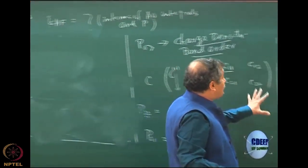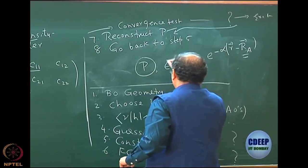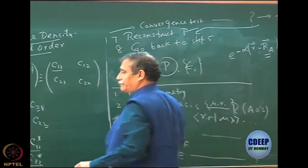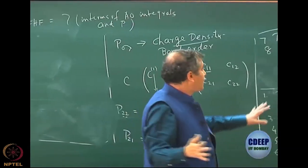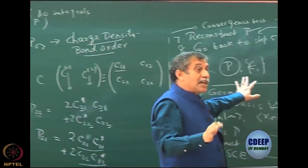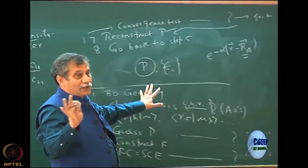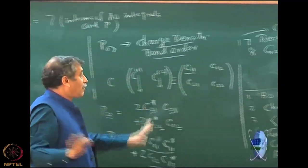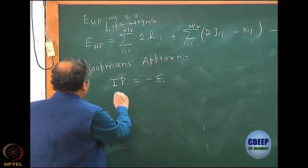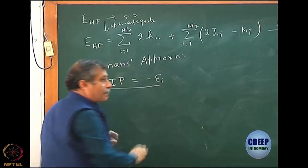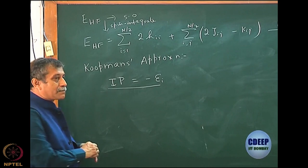Even when here I am doing FC equal to SC, I get the eigenvalues — the energies I get — which are actually molecular orbital energies. So I get this, and I am saying that my ionization potential is minus epsilon i.